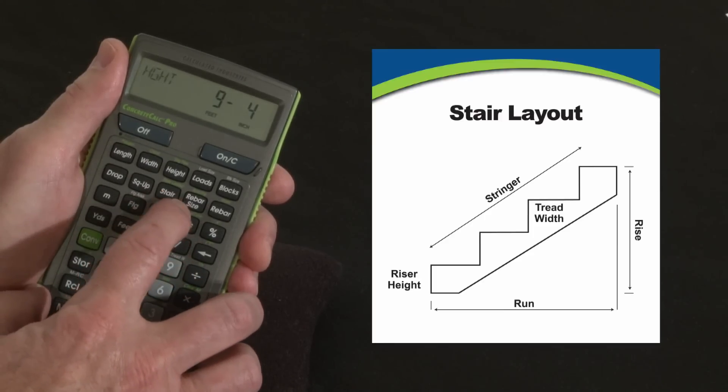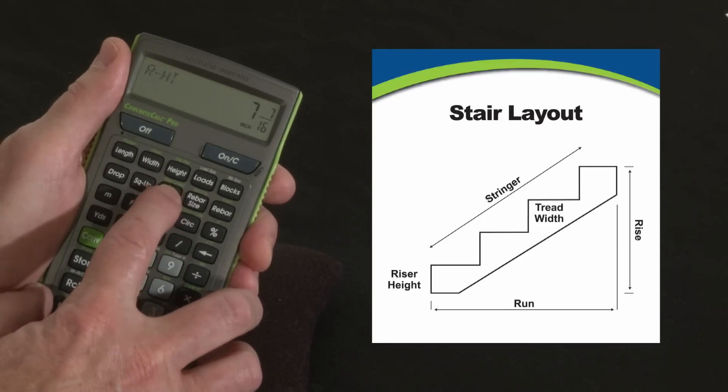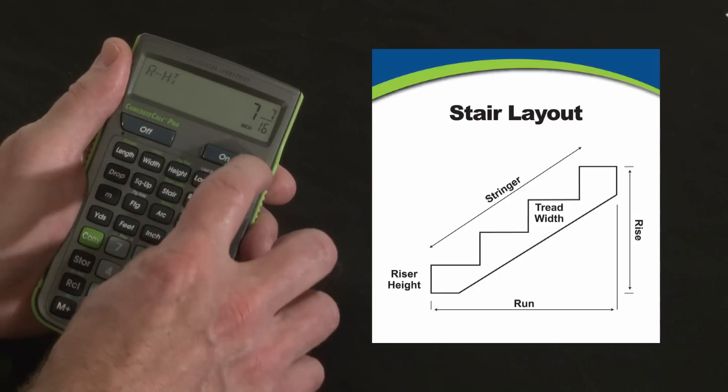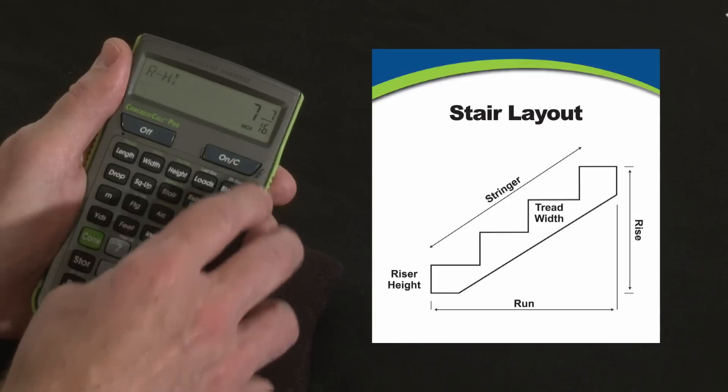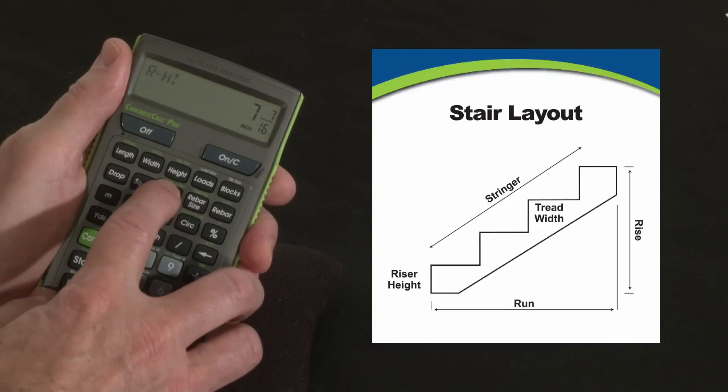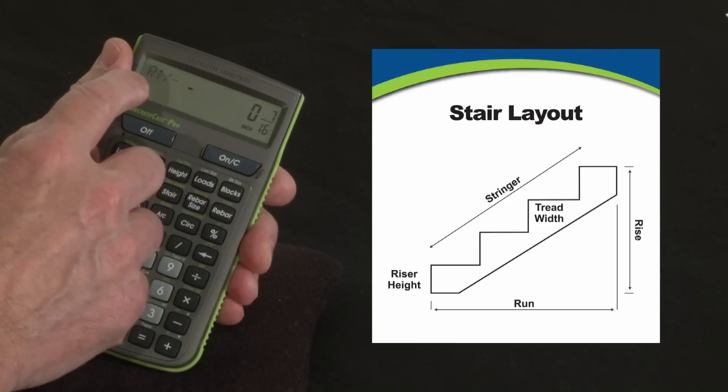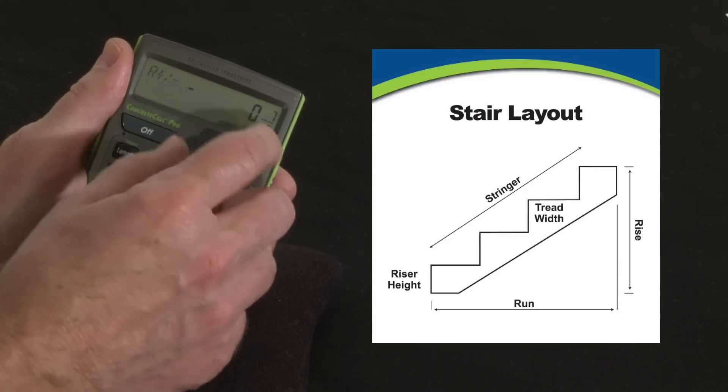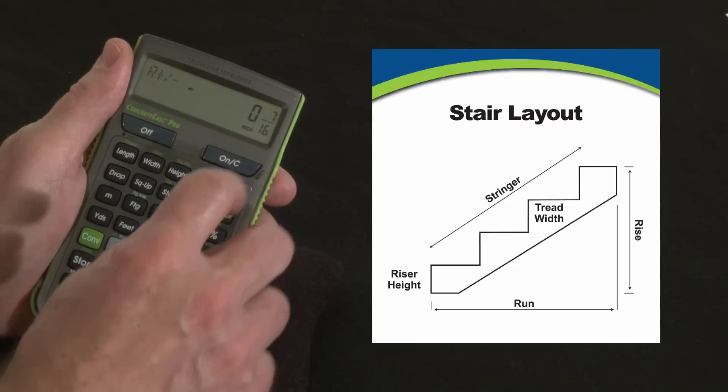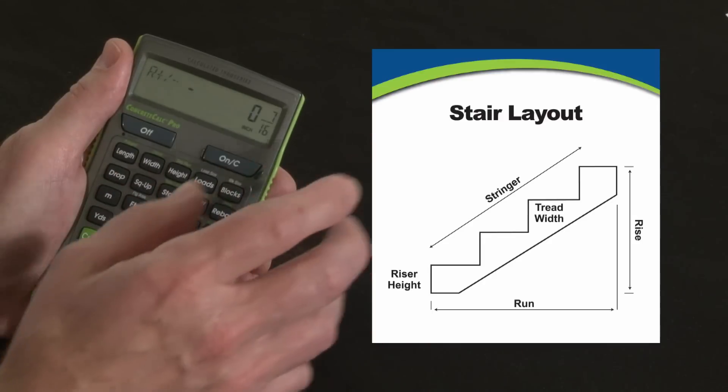Now I'm just going to press the stair key repeatedly for a whole series of answers. The first press tells me that the riser height that divides most evenly into that total drop is seven and seven sixteenths which is fine. Press it again and there's going to be fifteen risers. Press it again. The R stands for remainder. That says that there's a minus seven sixteenths of an inch adjustment that I need to make at the top or the bottom or spread it across several of them.